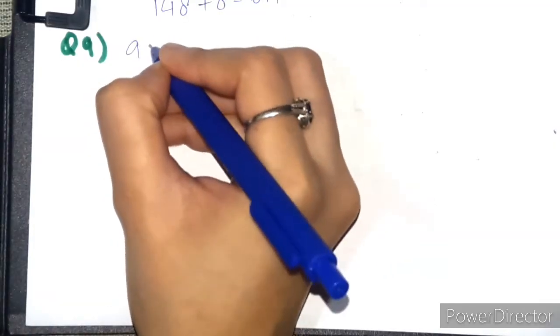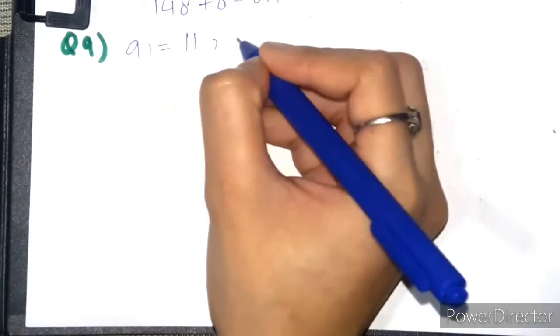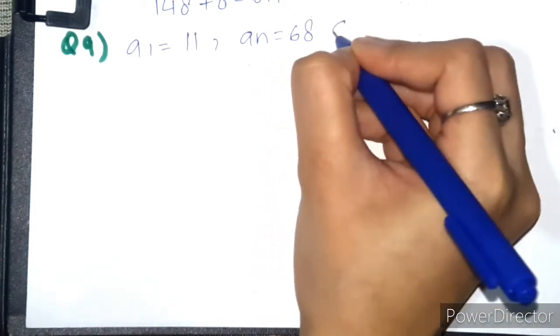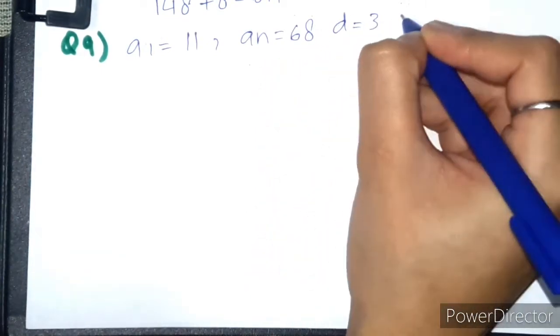So we have a1 = 11, an = 68, and d = 3. We need to find n.